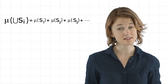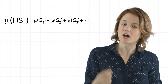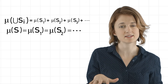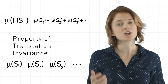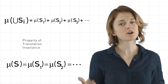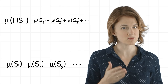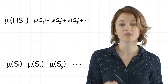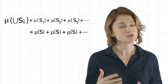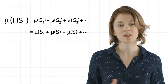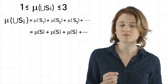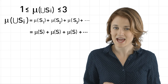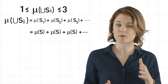Now, notice if S has a size, whatever that size may be, then each of the copies S1, S2, S3, and so on are also the same size as S. That's because they're just shifted copies of S, and by the property of translation invariance, shifting doesn't change size. Using our previous formula, and the fact that the size of each S1, S2, S3 is the same as the size of S, we now know that the size of the union of all the copies is just the size of S added to itself infinitely many times.